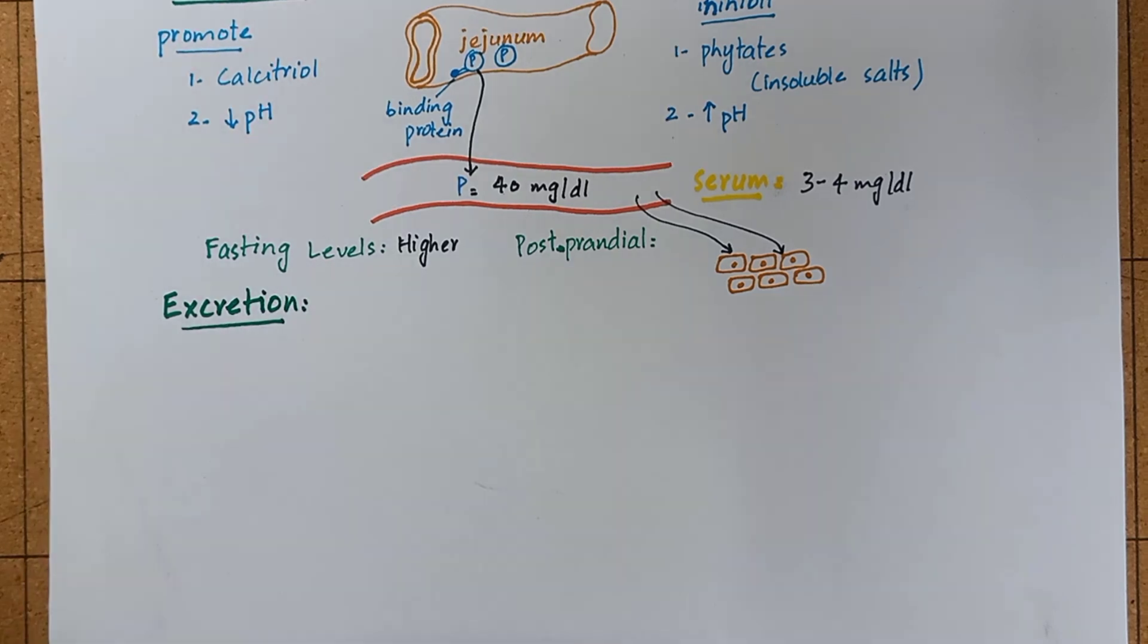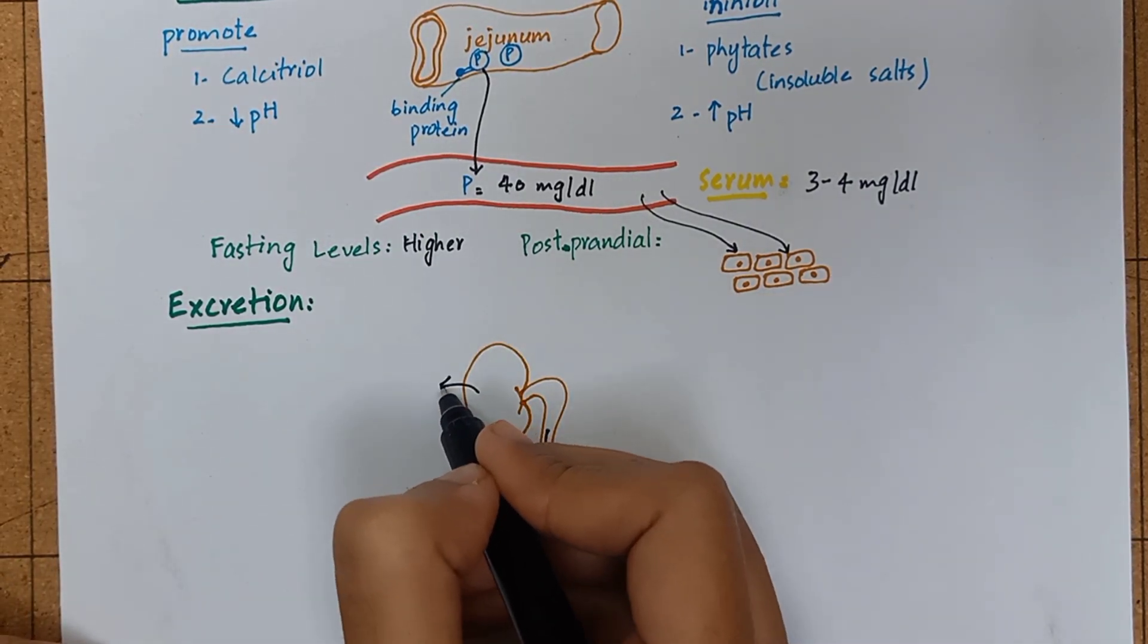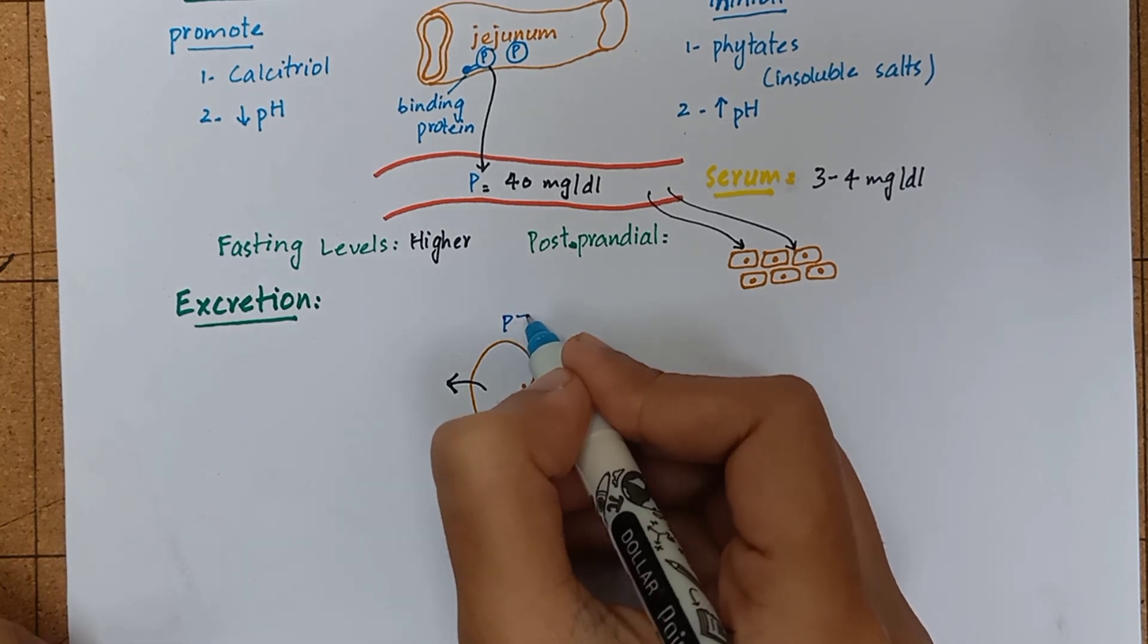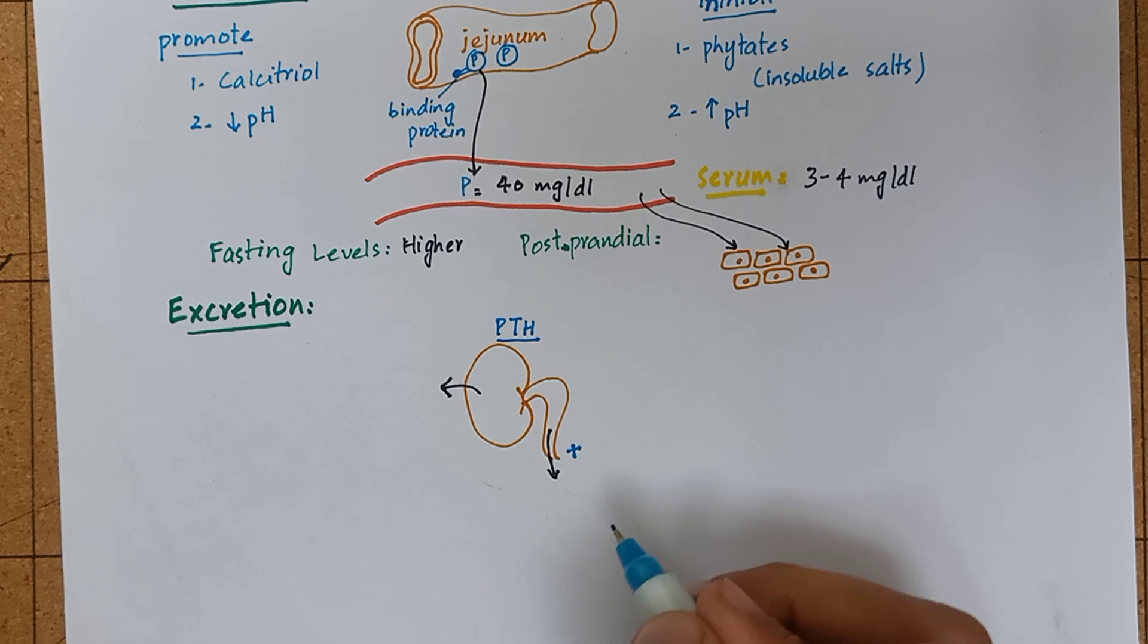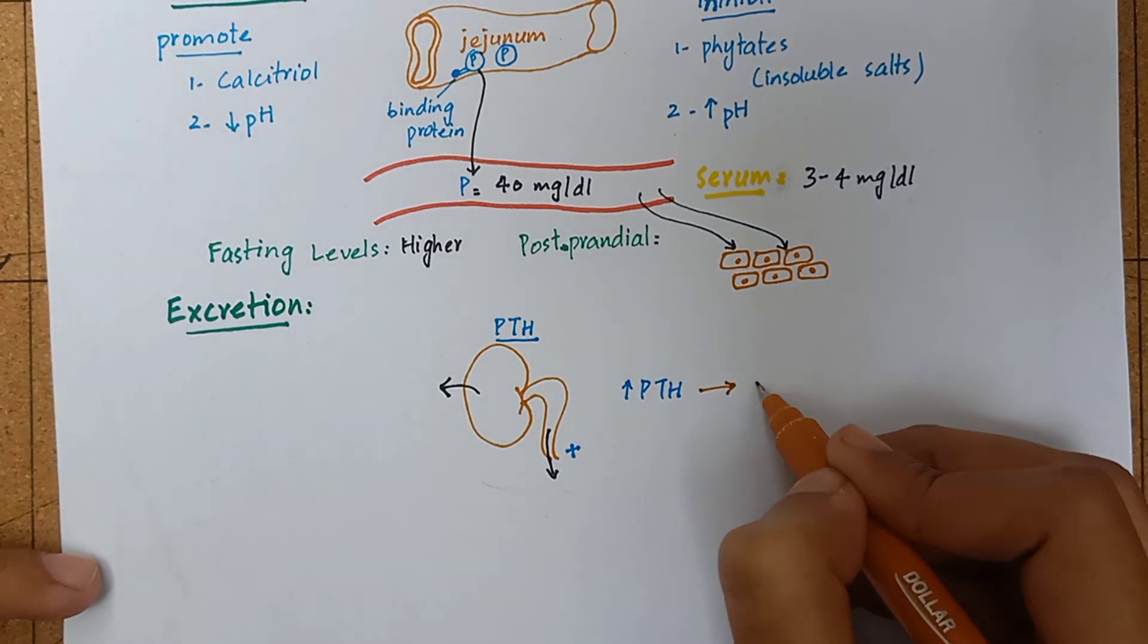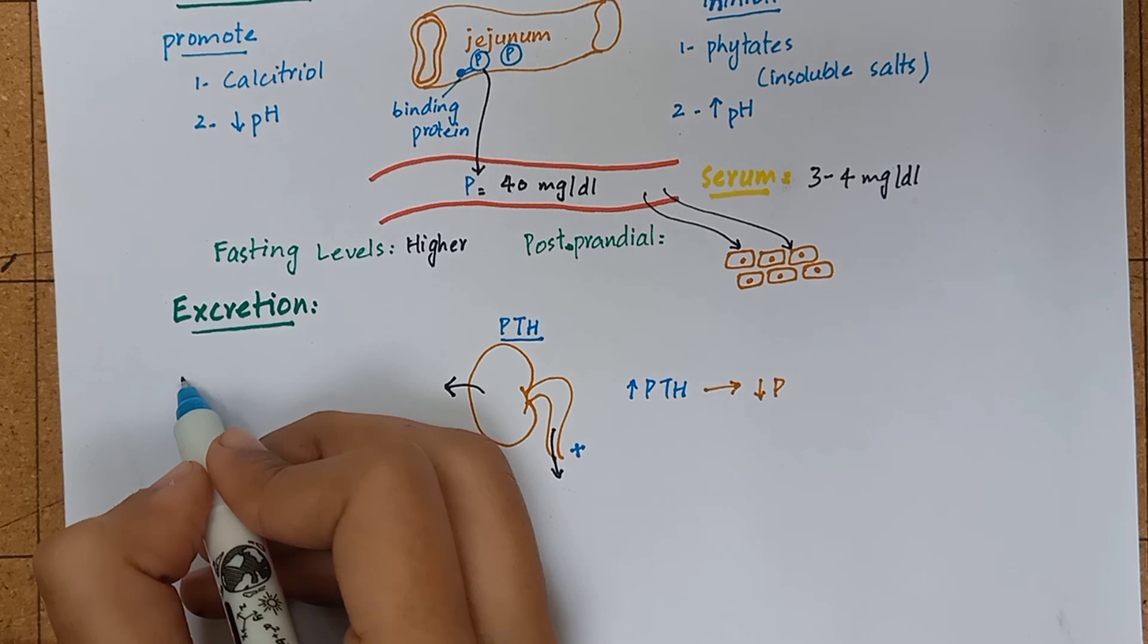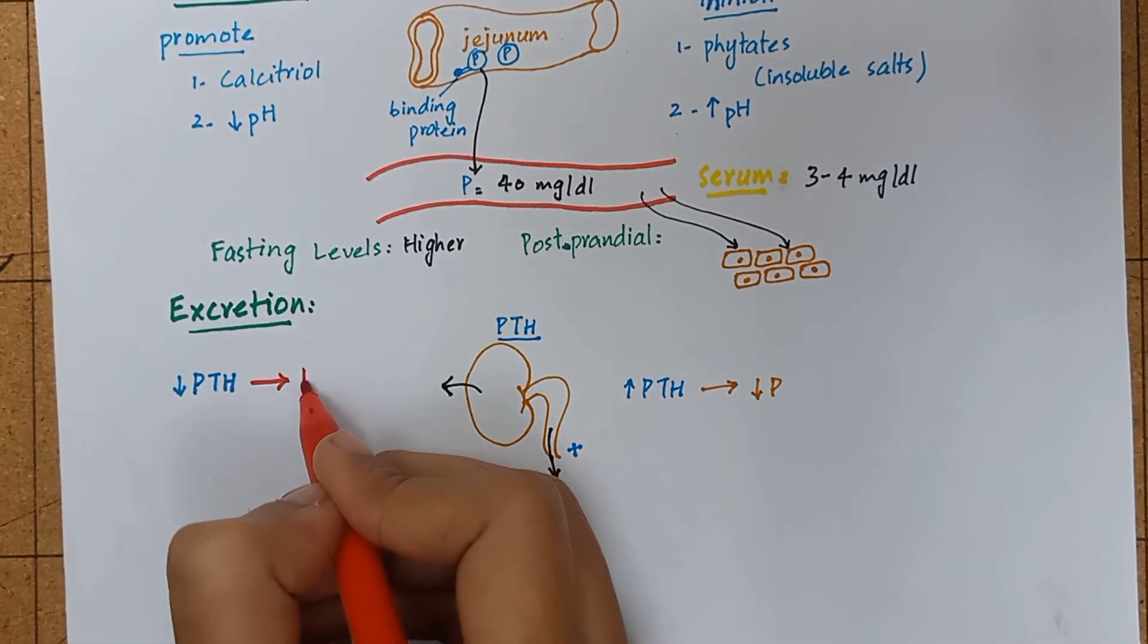Next, we have the excretion of phosphate. The renal excretion and reabsorption of phosphate is influenced by parathyroid hormone. Parathyroid hormone favors the secretion of phosphate in renal tubules. Any disease causing hyperparathyroidism will eventually cause low serum phosphate levels, while hypoparathyroidism leads to high serum phosphate levels.